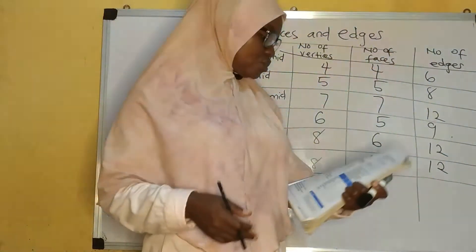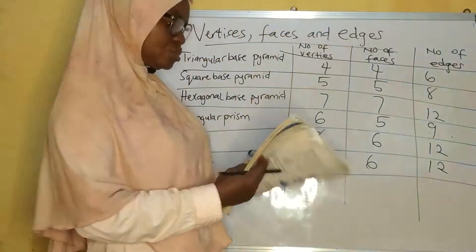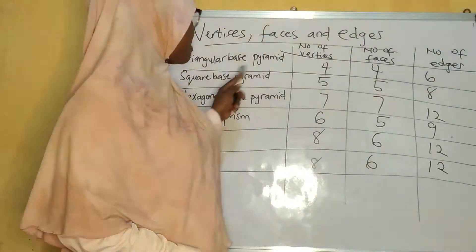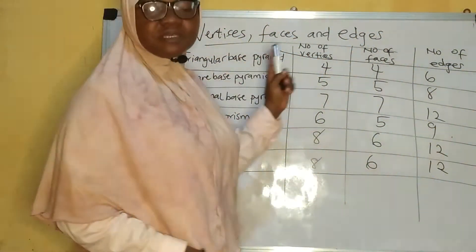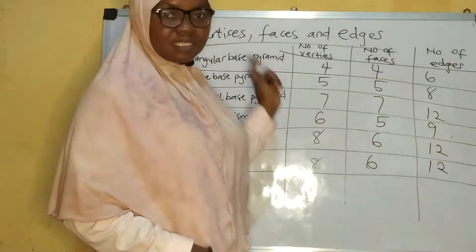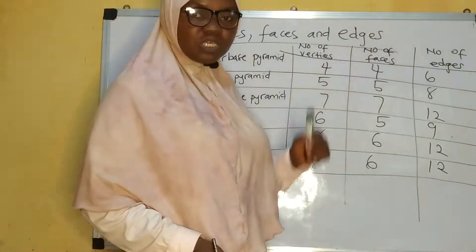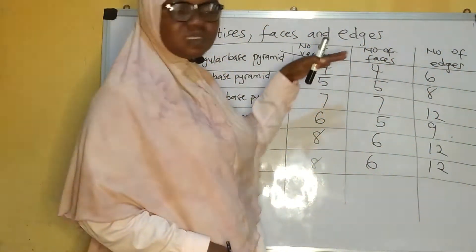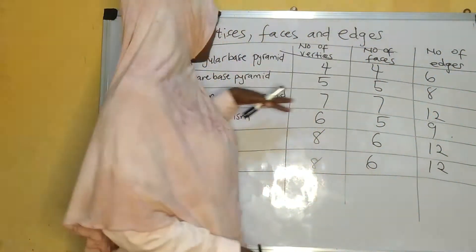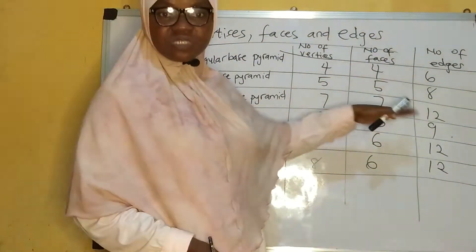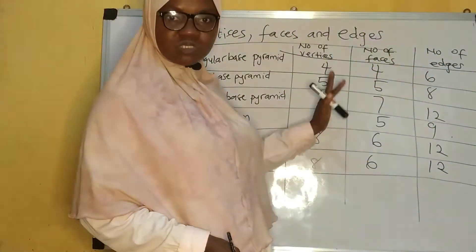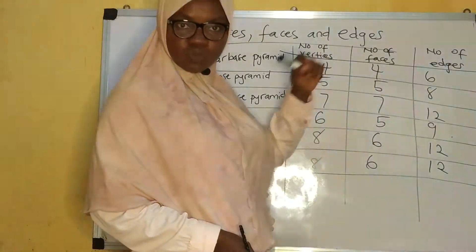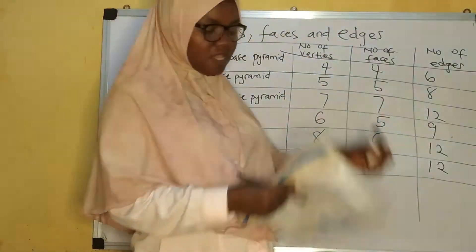Now let's delve into it. Before we go on, I would like to show you the pictures of the square-based pyramid, the triangular-based pyramid, the hexagonal-based pyramid, the cuboid, and the cube, so that we'll be able to see the number of faces, edges, and vertices. I've actually written them out but I want to show you how we arrive at all these figures one by one.